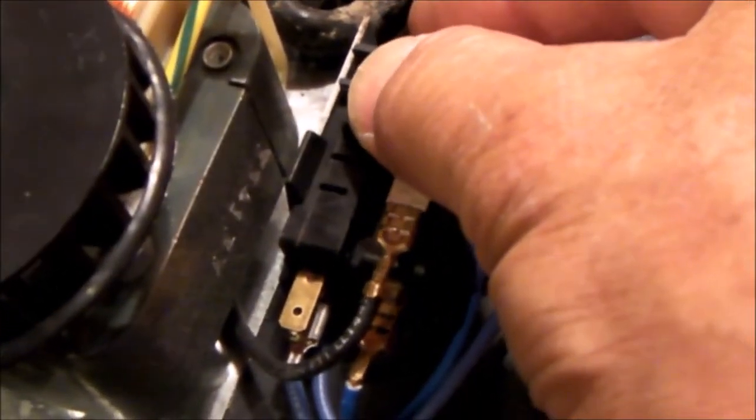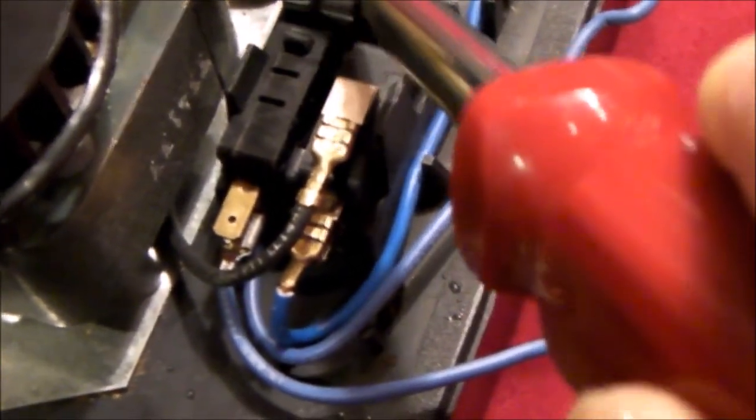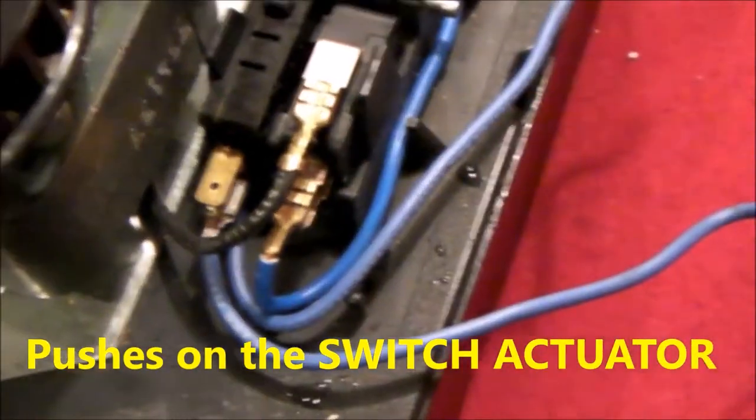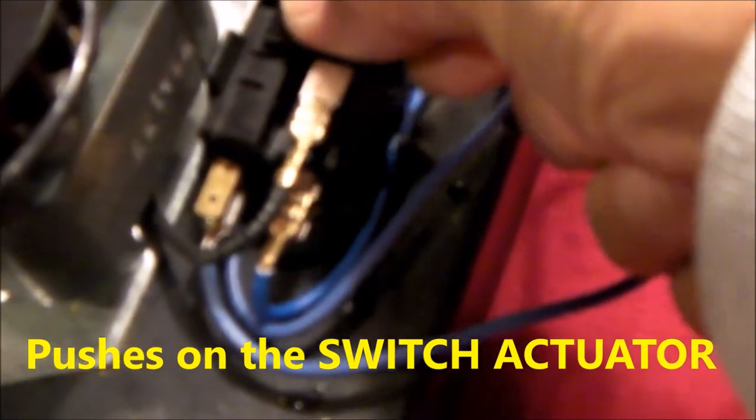So when the float rises up, you'll hear it gets to the top. This actuator arm right here pushes on this contact right here, closes the circuit. Because it was normally open, when the water gets too high it closes, and that turns on my alarm.